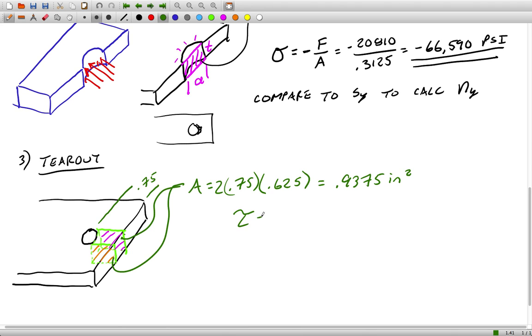As F over A, we get 22,000 psi. That's the same as we got for the plate tension, but here if we want to use that to calculate a factor of safety, we're going to compare to the yield strength in shear.